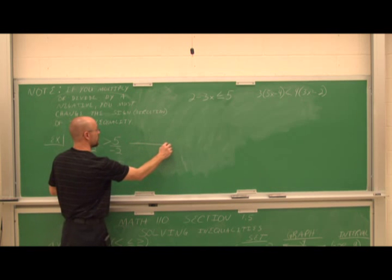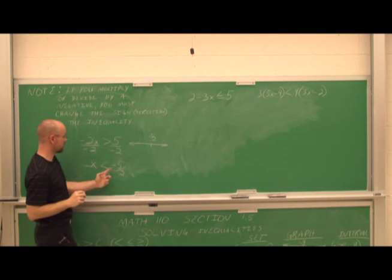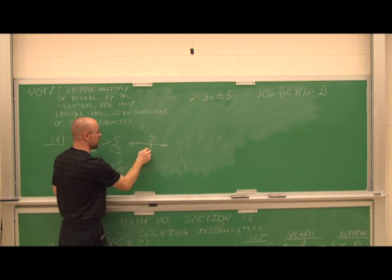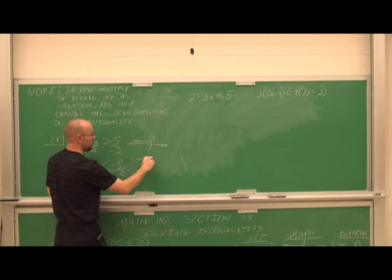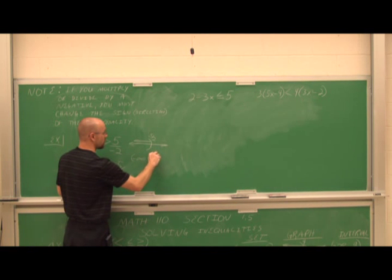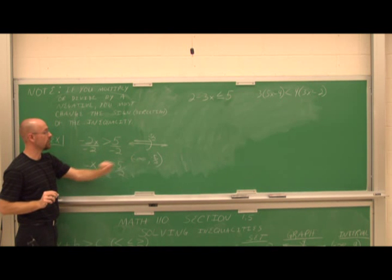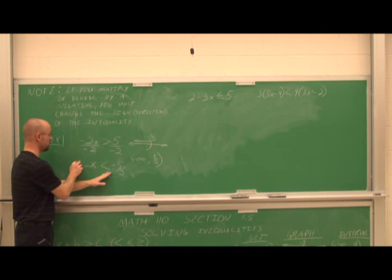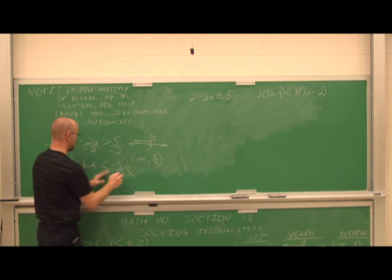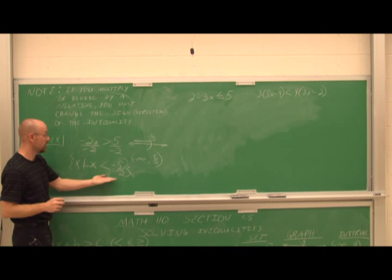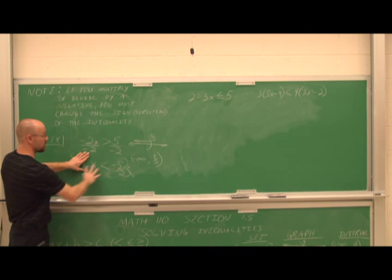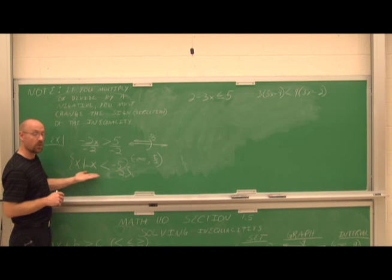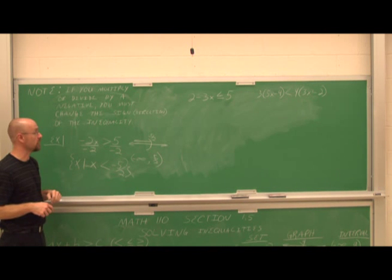If I graph x less than negative 5 halves, I place negative 5 halves on the number line, use a parenthesis since it's not included, and shade to the left. The interval goes from negative infinity to negative 5 halves with a parenthesis. This is essentially set notation; I just need to add 'x such that' and the braces. Some instructors only require the simplified inequality; others want full set notation.